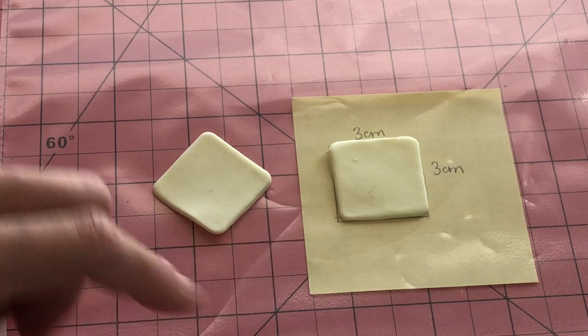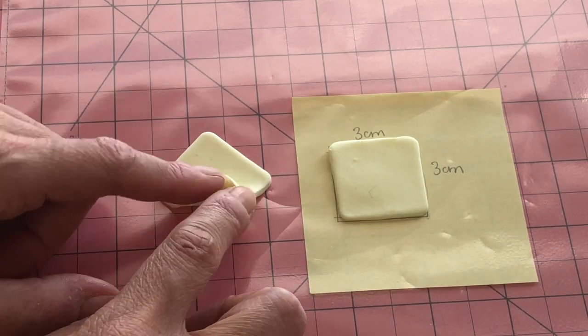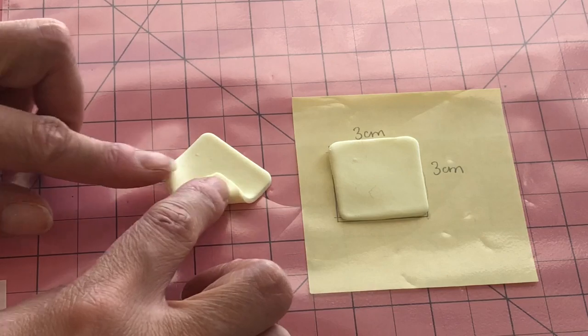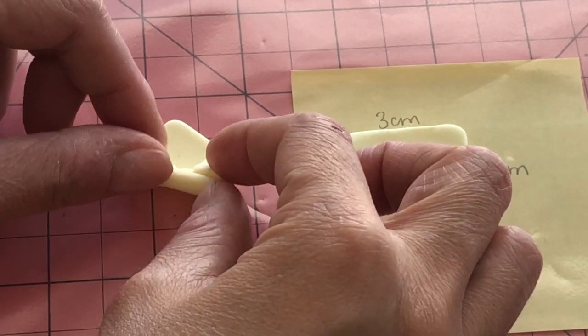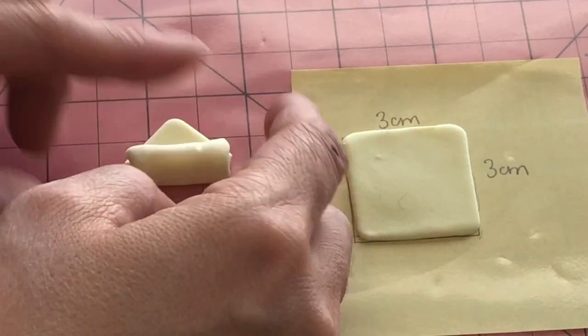With one corner facing you, fold up the bottom, then fold in the left and right sides. It should look like a mini envelope. Now, gently roll up the clay to seal the egg roll.